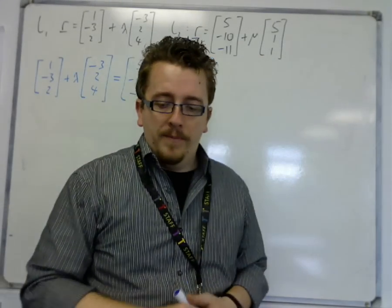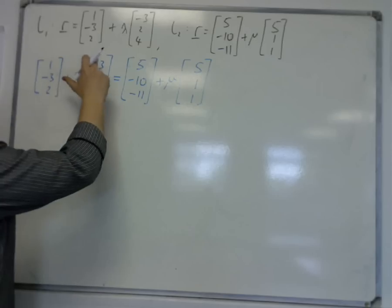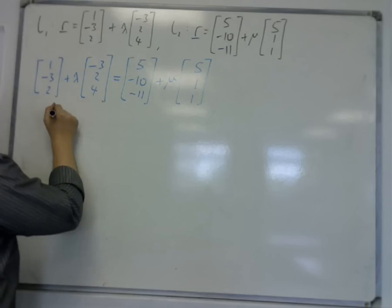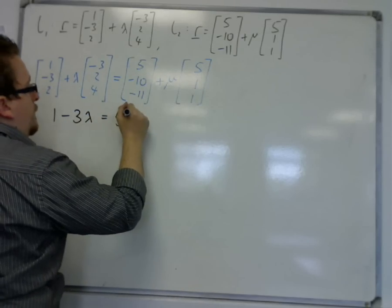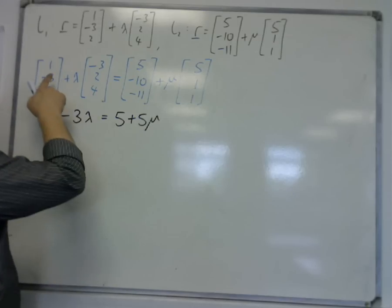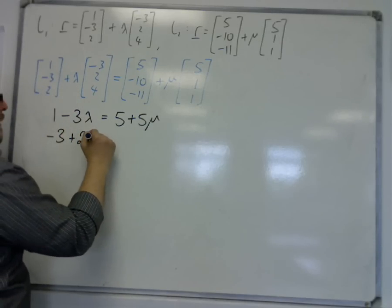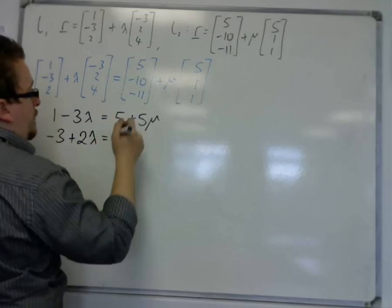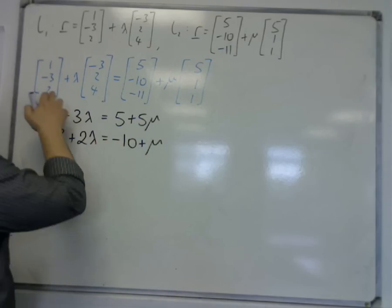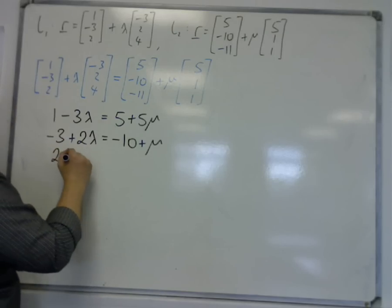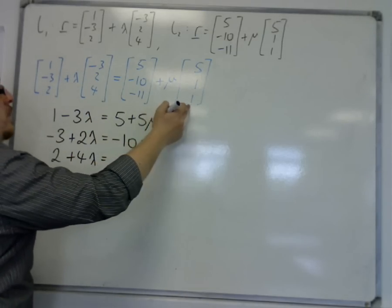Now from that, we can construct the three simultaneous equations. 1 minus 3 lambda equals 5 plus 5 mu. We have minus 3 plus 2 lots of lambda must be equal to minus 10 plus mu. We also have 2 plus 4 lots of lambda is equal to minus 11 plus 1 lot of mu.